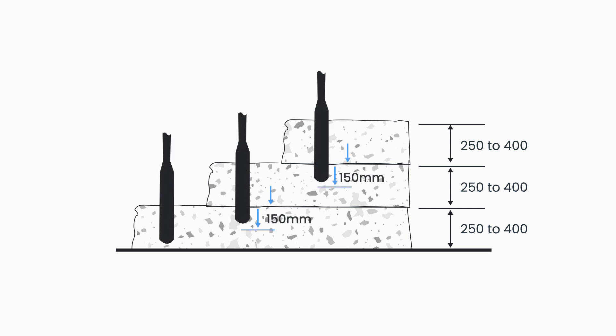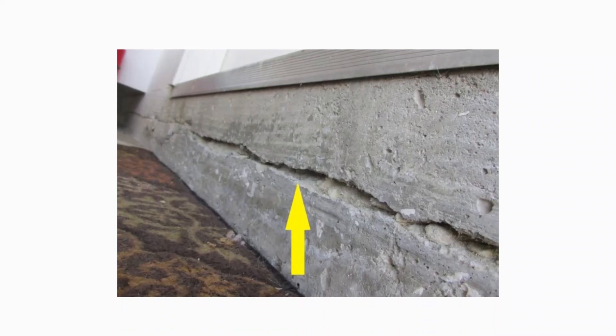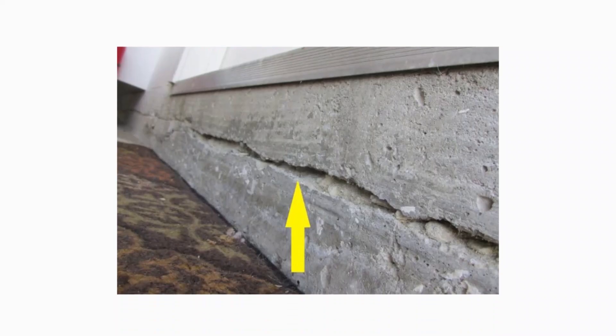Immersion poker vibrators should extend about 150mm into the previous layer of fresh concrete, to meld the two layers together and avoid cold pour lines on the finished surface.